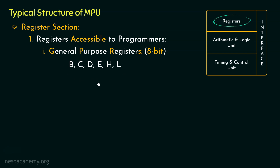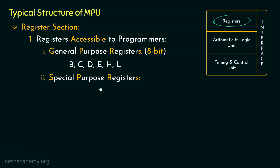Additionally, these registers can also be used as pairs — BC, DE, and HL. When they are used as pairs, they are used as 16-bit storage. Basically, B is 8 bits and C is also 8 bits, so together they can facilitate 16-bit storage space. The same can be stated for DE and HL.